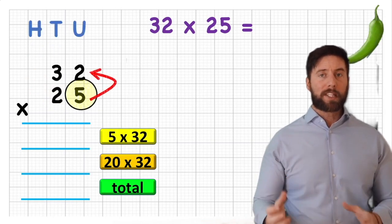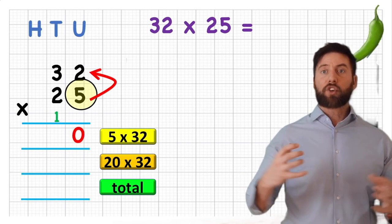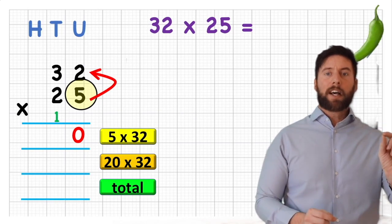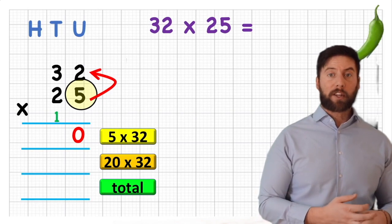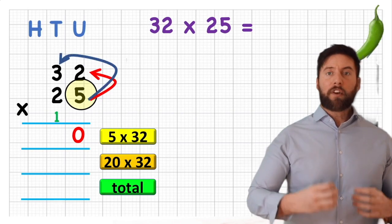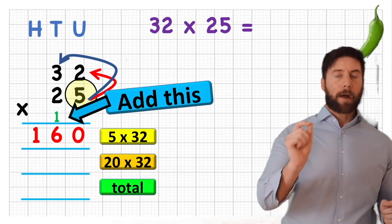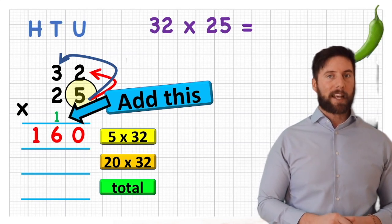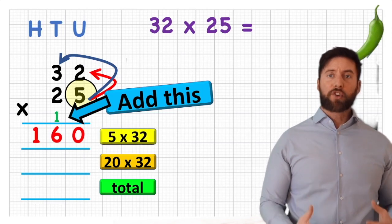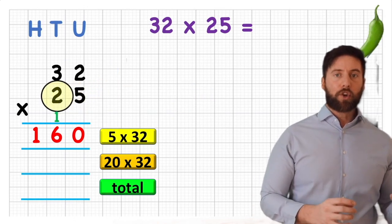It's really important to understand exactly what we're doing and where our numbers and answers are coming from, rather than just following a process. Let's do 5 times 2: that's 10, so I put the 1 into my tens column as a small carried digit and put my 0 in the units column. Now, 5 times 3 is 15 — no hundreds, so I put the answer straight in, but I must add on that carried 1 from before: 15 plus 1 is 16. So the answer to 5 times 32 is 160.